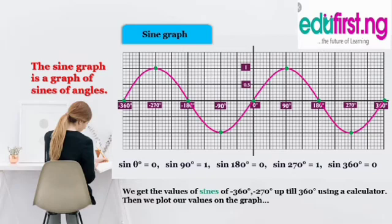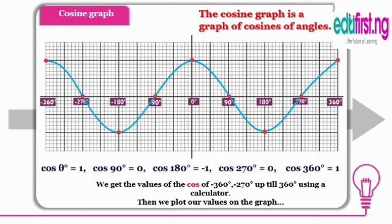The characteristics of this cosine graph is that it does not pass through 0. You see the blue line, which is our graph line. It doesn't go through 0. That's what makes it different from the sine graph.